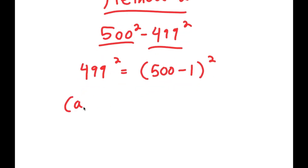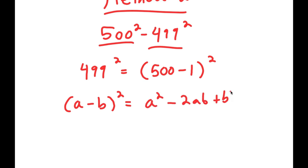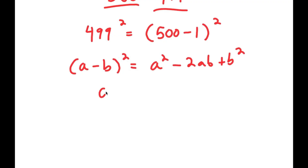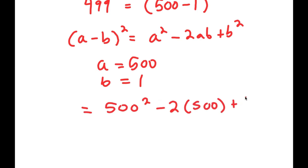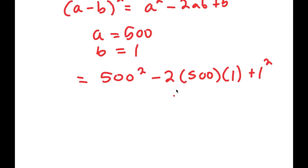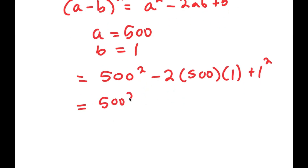If I have something in the form a minus b squared, this is equal to a squared minus 2ab plus b squared. So in this case, a is 500 and b is 1. This is going to turn into 500 squared minus 2 times 500 plus 1 squared, which simplifies to 500 squared minus 1,000 plus 1.